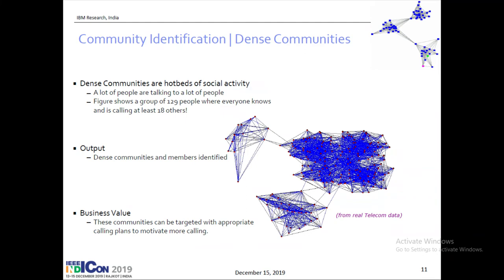For example, if I know that these people are all subscribing from a company — many times a company says all my employees will get a package deal from Vodafone — maybe this is something like that. Or I do not know if they are all interested in golf or cricket. The thing is that at least we can point the marketing department to a subset of users and say: here is something interesting, go and find out more about them and do something with it.